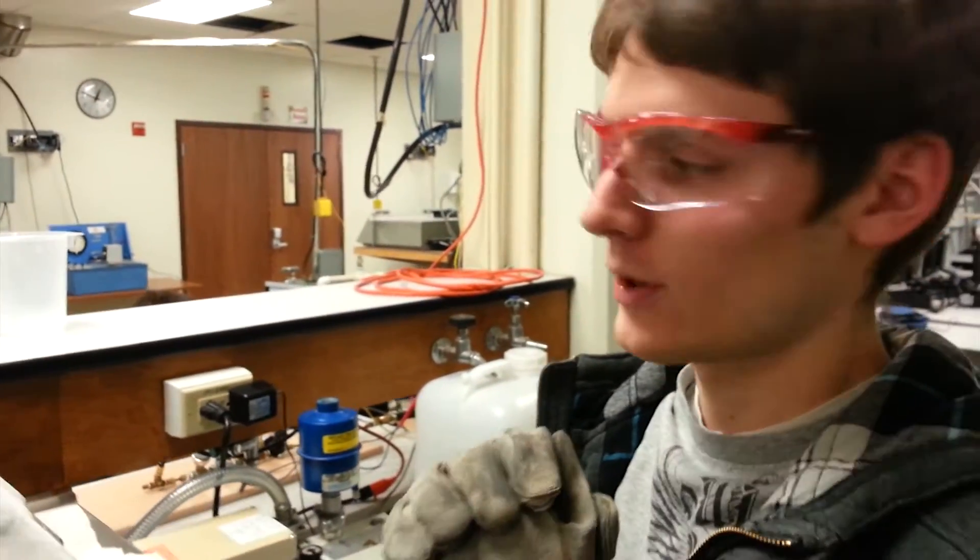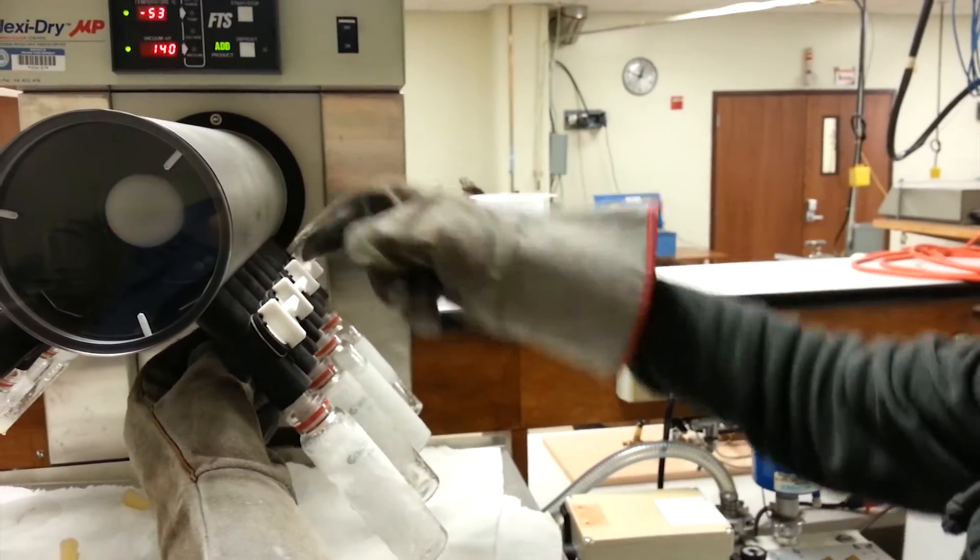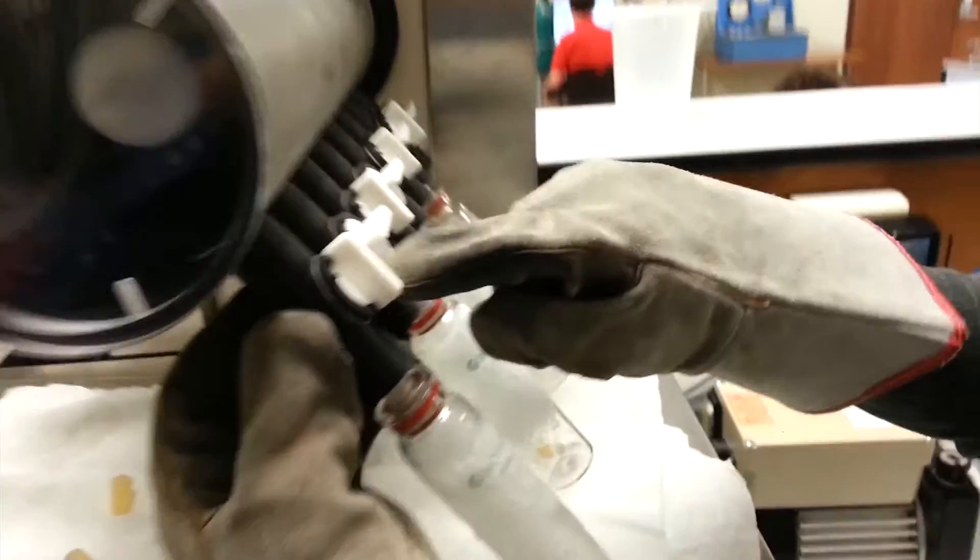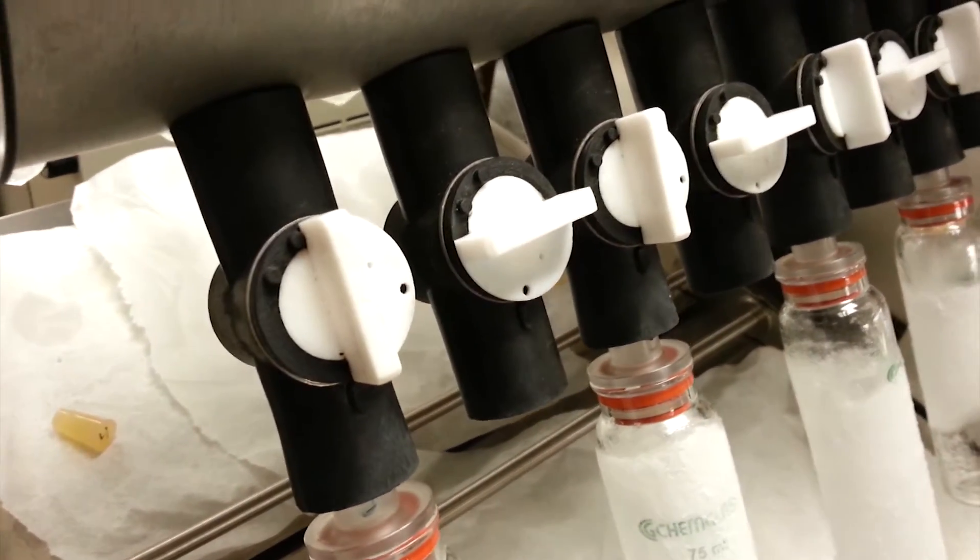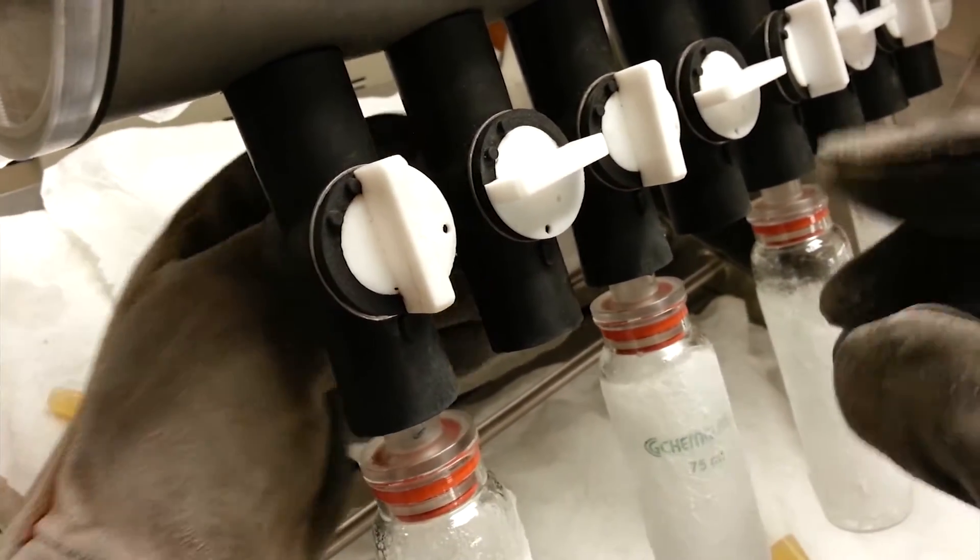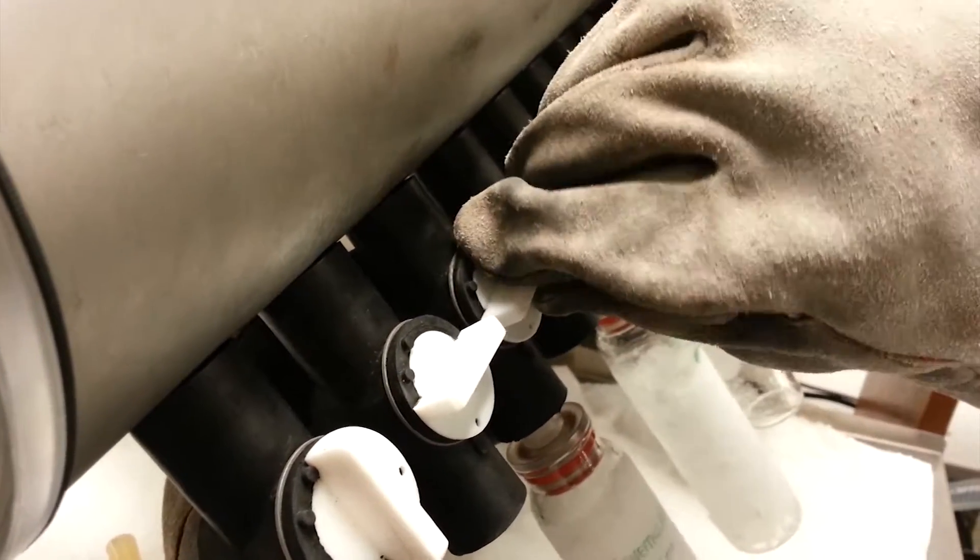Now one thing that you have to make sure as well when you're taking these off is you never want to turn this vial up with this whole part right here up on the top. Otherwise, that'll mess with the vacuum and I think it opens it up to the atmosphere. So whenever you pull one off, you want to turn that down and that'll close it off to the sample.